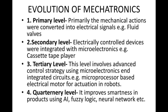An example of secondary level is a cassette tape player. In the tertiary level, advanced control strategies using microelectronics and integrated circuits were involved with electronic systems. For example, microprocessor-based electrical motors for actuation in robots. The quaternary level improves the smartness in products using artificial intelligence, fuzzy logic, neural networks, and many other latest technologies. The quaternary level is the level which is being used by scientists nowadays.